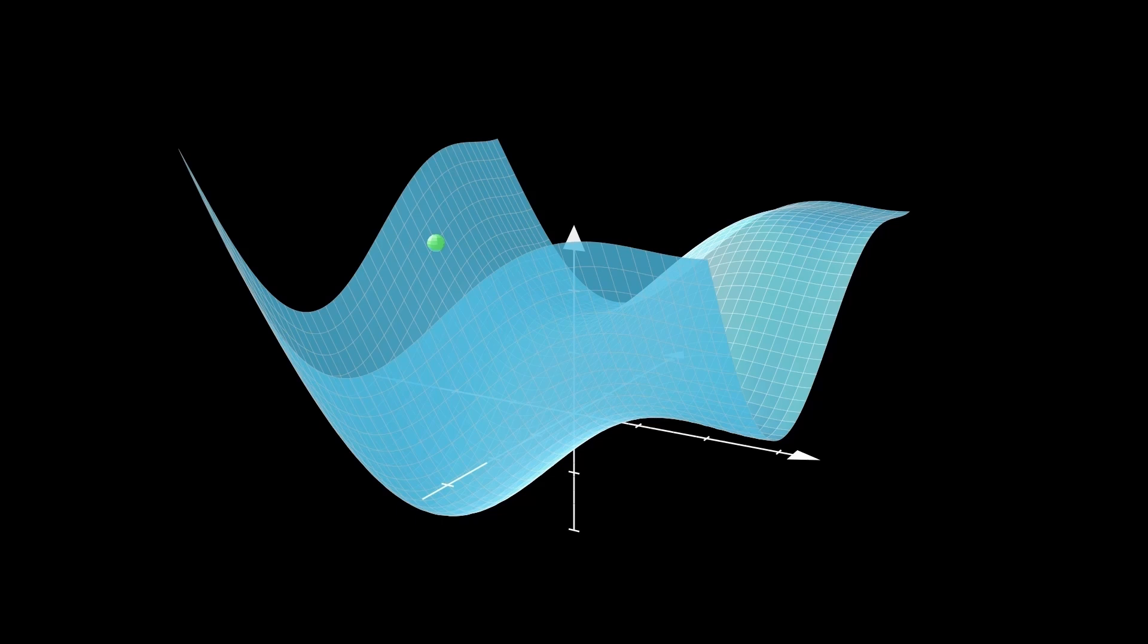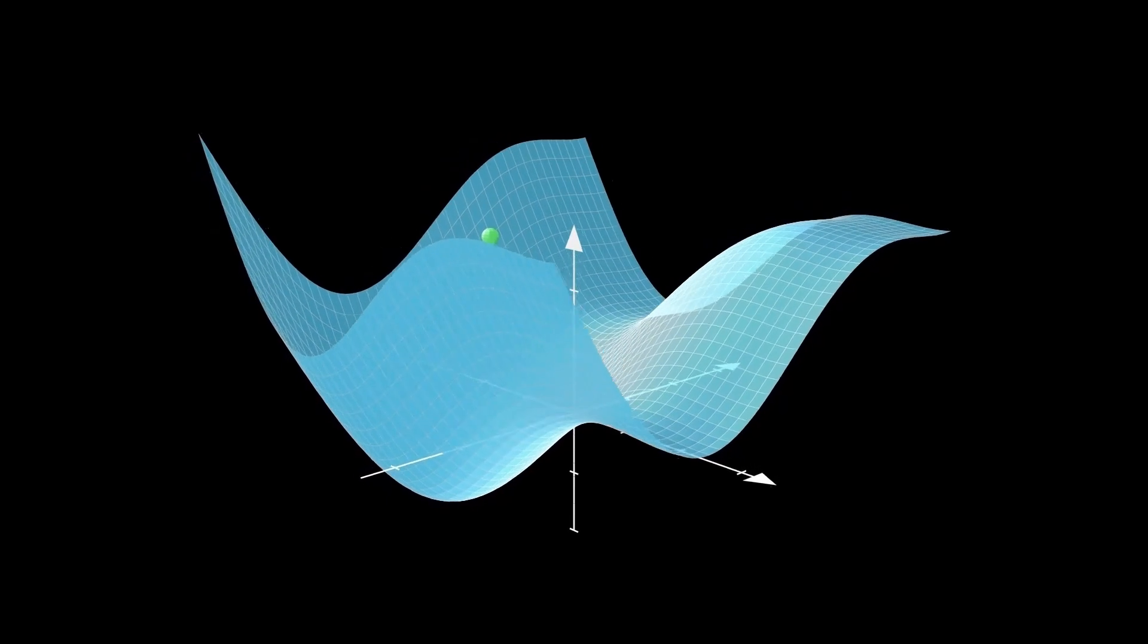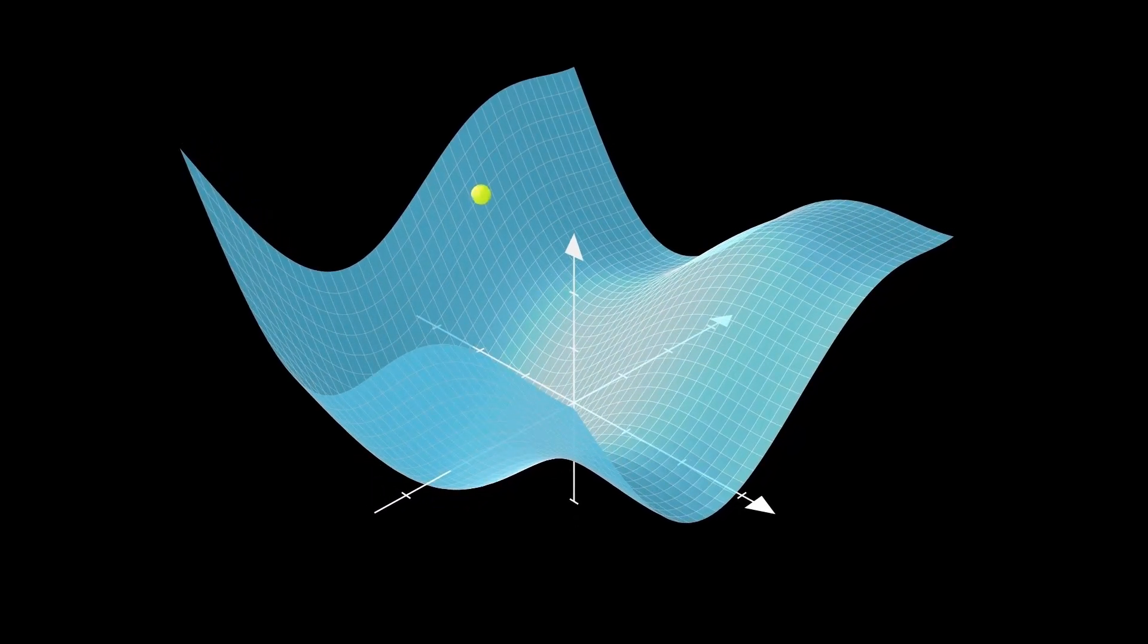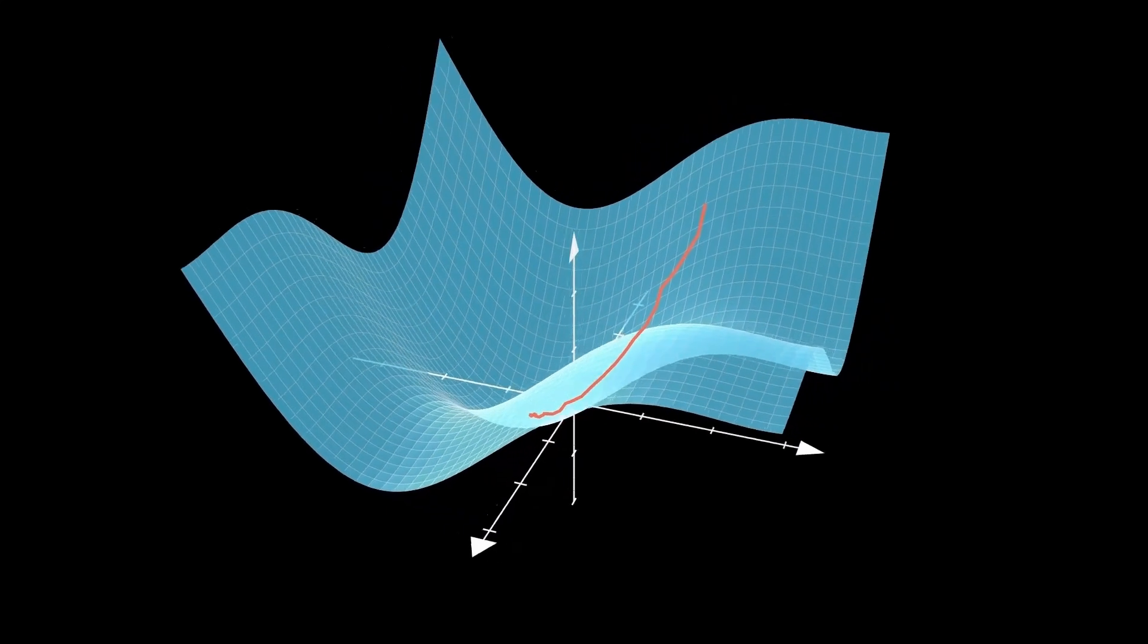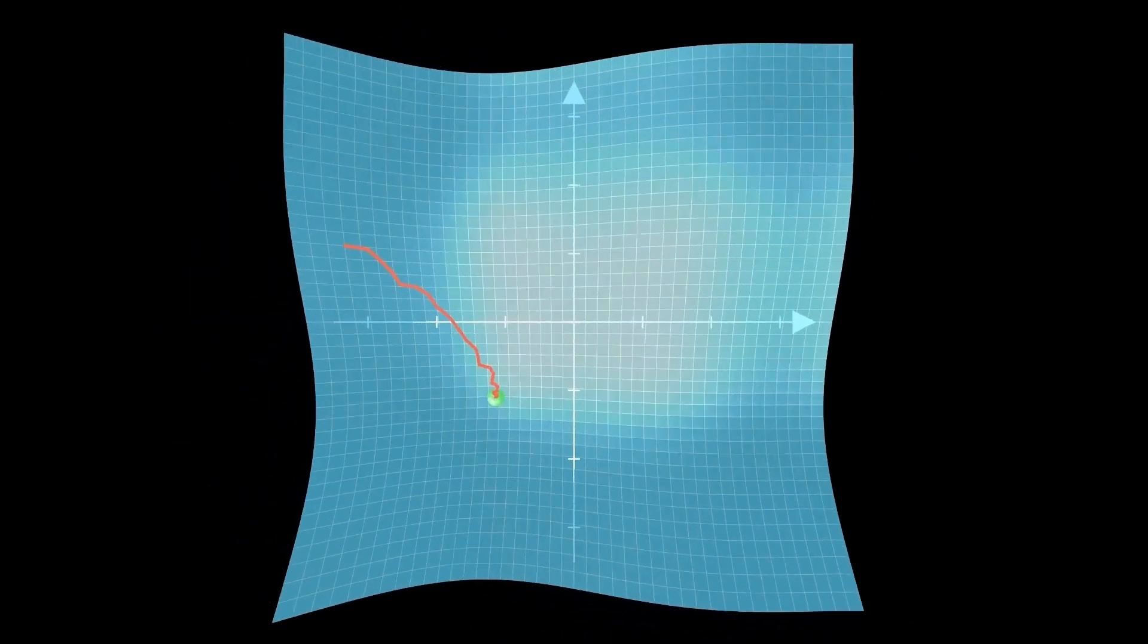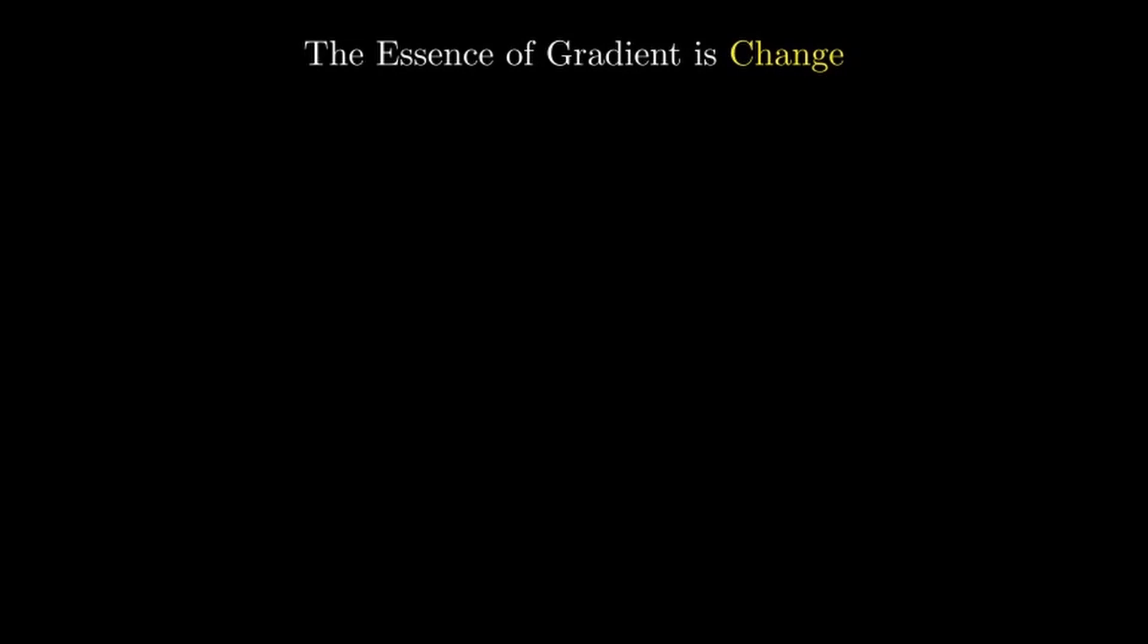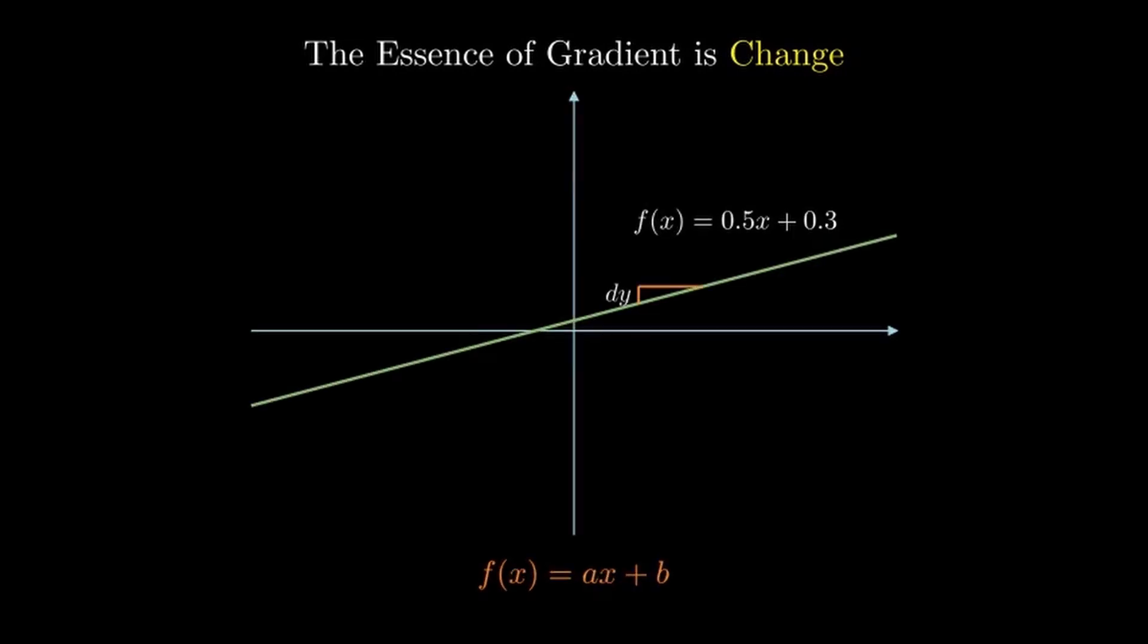That meaning is what we'll try to uncover here. We're watching gradient descent in 3D with Manim following the path as it descends, and we'll dig down to the essence so we can understand gradients both intuitively and mathematically. At its core, a gradient is all about change.